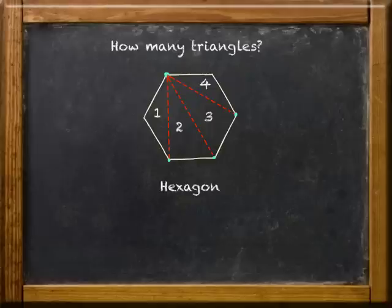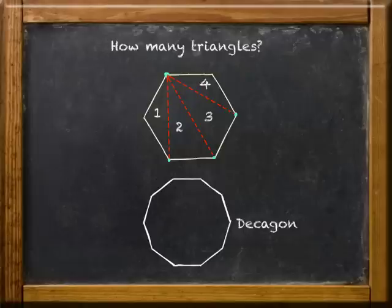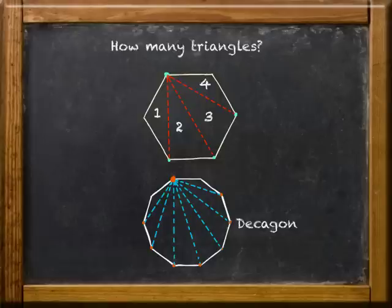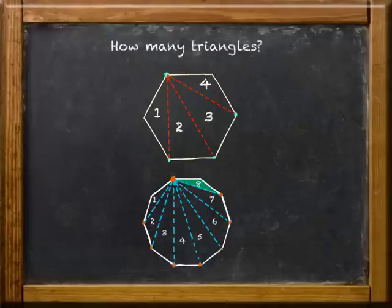How about if we try the same thing for a ten-sided polygon? That's a decagon, remember? Well, to get the total number of triangles, let's do the same thing. Choose a vertex, connect it to as many other vertices as we can, and then count the triangles. And what do we have? Well, it looks like a ten-sided figure has eight triangles.